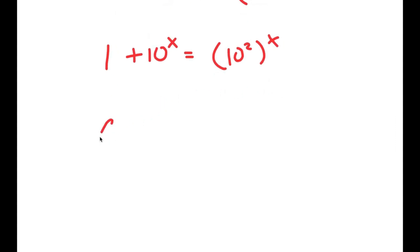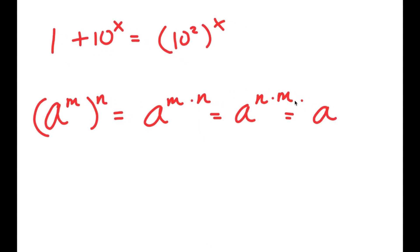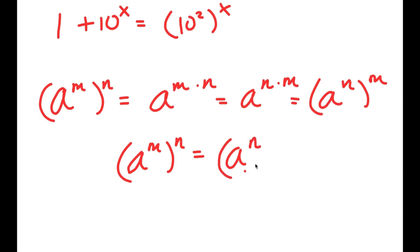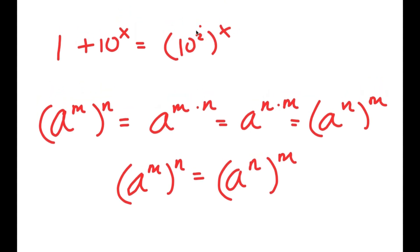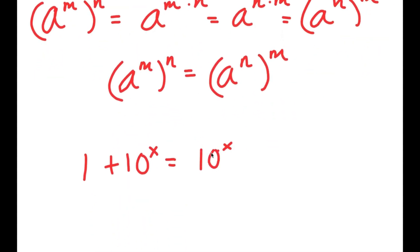Now, if I have something in the form a to the power of m to the power of n, this is equal to a to the power of m times n. And a to the power of m times n is the same thing as a to the power of n times m. So a to the power of n times m is equal to a to the power of n to the power of m. In simpler terms, a to the power of m to the power of n equals a to the power of n to the power of m. So for 10 squared to the power of x, I can switch the values of 2 and x. So now I get 1 plus 10 to the power of x is equal to 10 to the power of x to the power of 2.